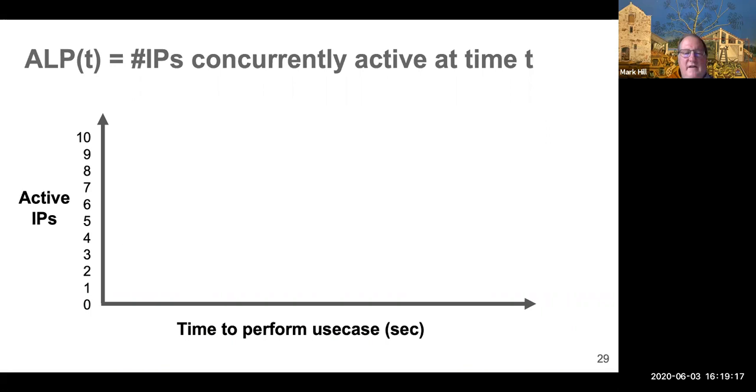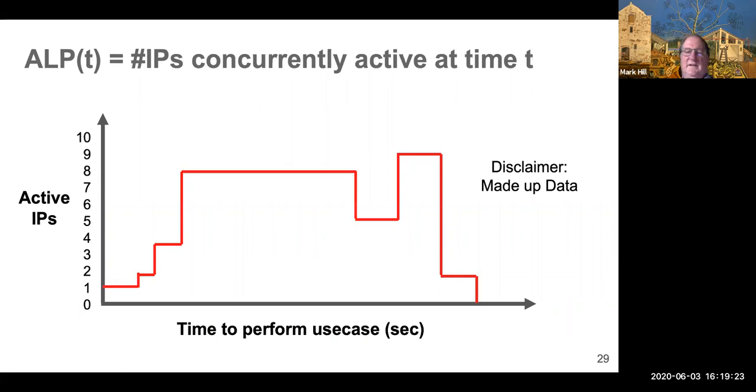So what do we think of this ALP? Well, it's the number of active IPs in the use case over time. And so it might look like this. Now, the disclaimer here is that this is totally made up data, and I would encourage you to get data. In fact, Vijay Janapa Reddy, my co-author, has work on, his student is trying to develop an infrastructure to do this, and it's hard, but I think it's necessary. And I think this is another level to look at.